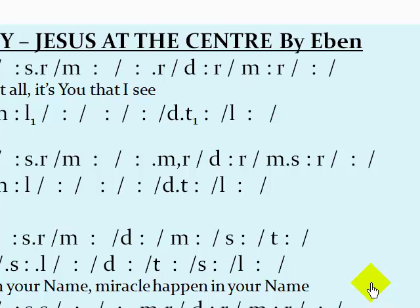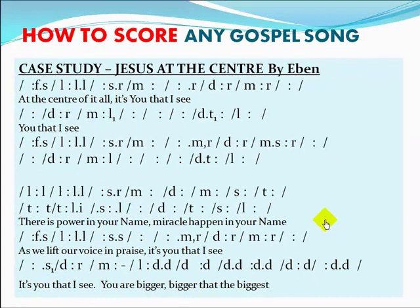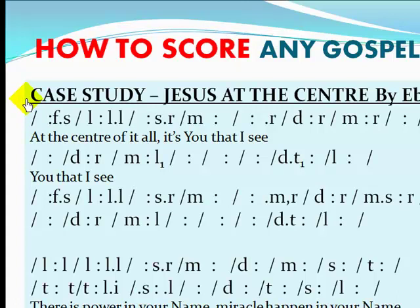Now, looking at the notes for 'Jesus at the Center': Mi Re Do Re Mi Re Do Re Mi La — then you have the instrument, followed by Sol La La La Sol Re Mi Mi Re Do Re Mi Sol Re Do Re Mi La. Then: 'At the center of it all, it's You that I see — it's You that I see.' Full beats were applied here; the indented line can represent a bar, and I'm using two-two beats in a bar.